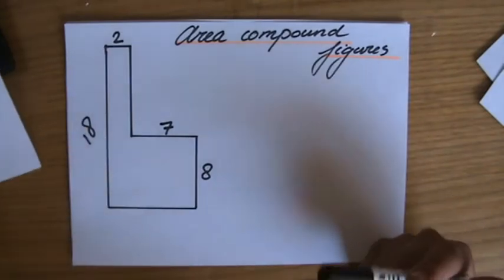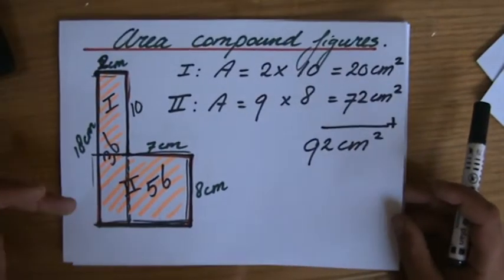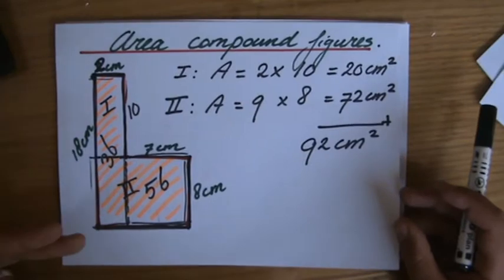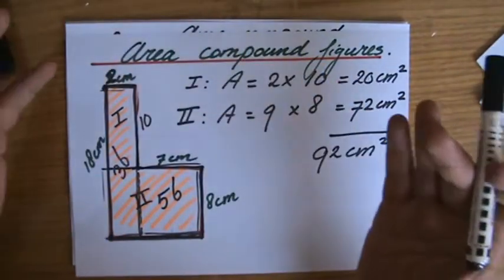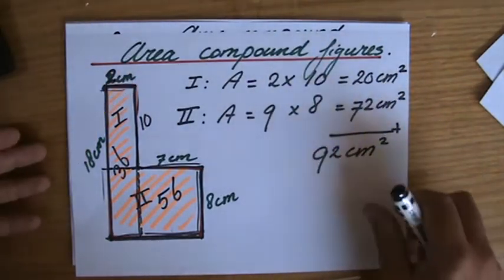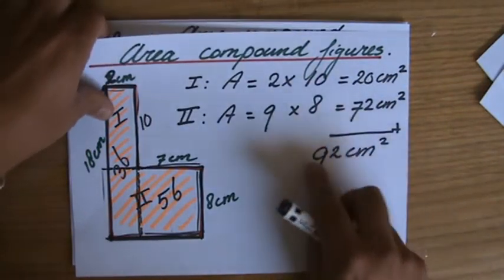Make sure you have seen part one first where I use my mental scissors to cut it into two rectangles of which I can find the area of. Then to find the complete area I plus those two areas with each other.